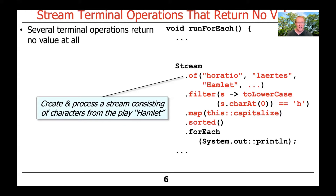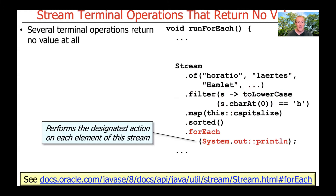Several terminal operations return no values at all, namely for-each and for-each-ordered. The example takes the characters from the Hamlet play, gets rid of anybody that doesn't start with a lowercase or uppercase H, consistently capitalizes everything, sorts the results, and then prints the results using the side effect of calling println via the system.out::println method reference.